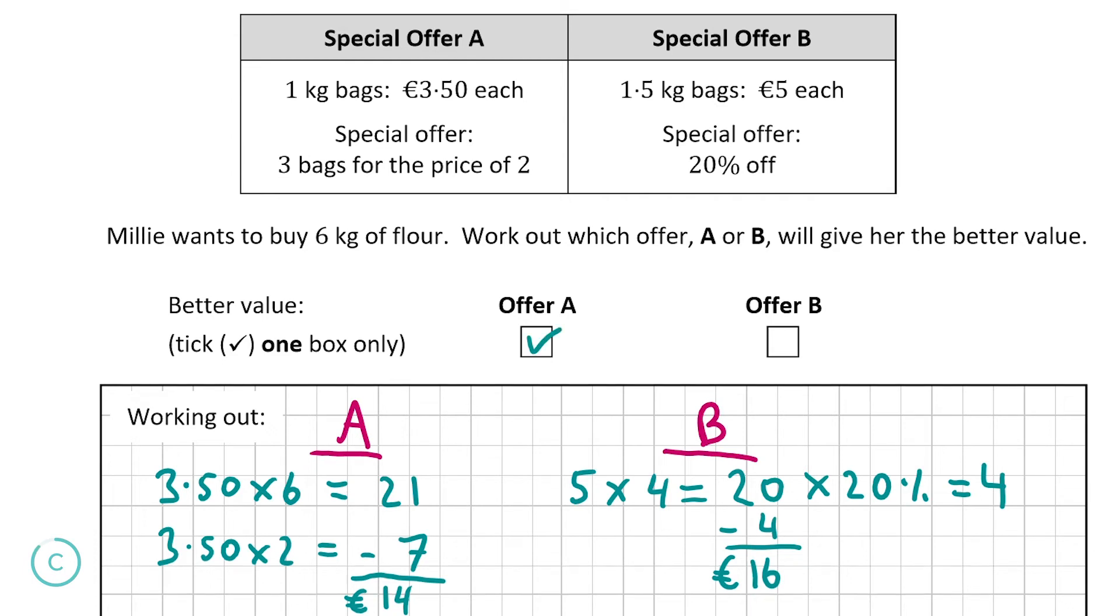This question isn't too difficult. Just make sure to remember that the size of the bags are different with special offer A and special offer B. They're 1 kg in offer A and 1.5 kg in offer B. Keep an eye out for that and always show your workings. Now we're going to move on to part D.